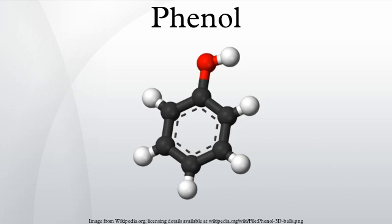Phenol, also known as carbolic acid, is an aromatic organic compound with the molecular formula C6H5OH. It is a white crystalline solid that is volatile. The molecule consists of a phenol group bonded to a hydroxyl group. It is mildly acidic, but requires careful handling due to its propensity to cause chemical burns.